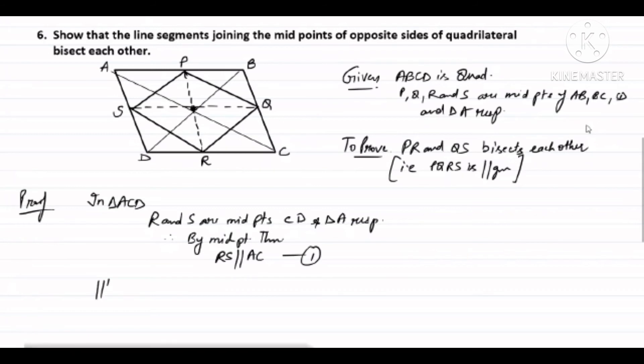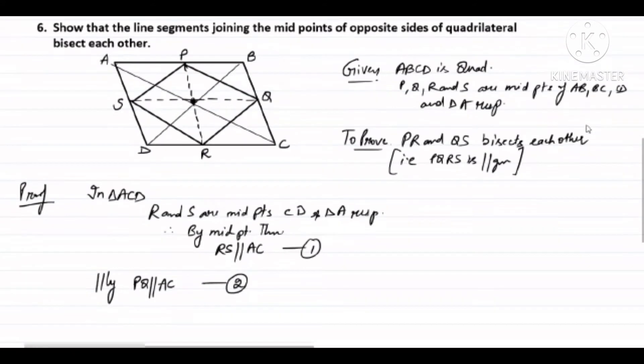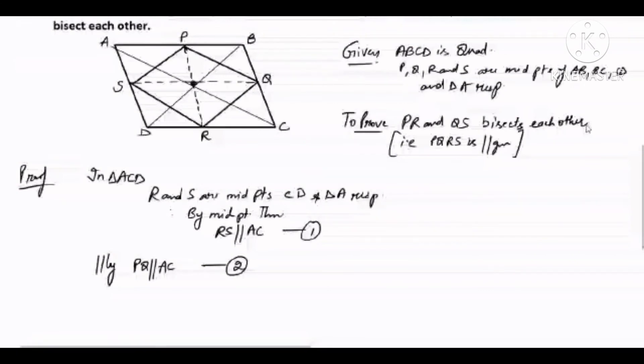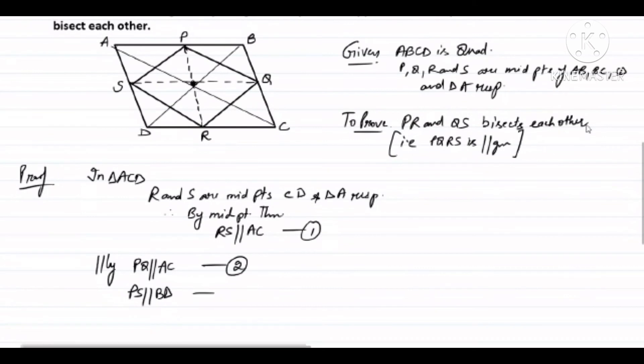Similarly, I can show that PQ is also parallel to AC. Let's call this number two. Also, if I consider triangle ABD, I can prove that PS is parallel to BD, number three, and QR is also parallel to BD, number four.